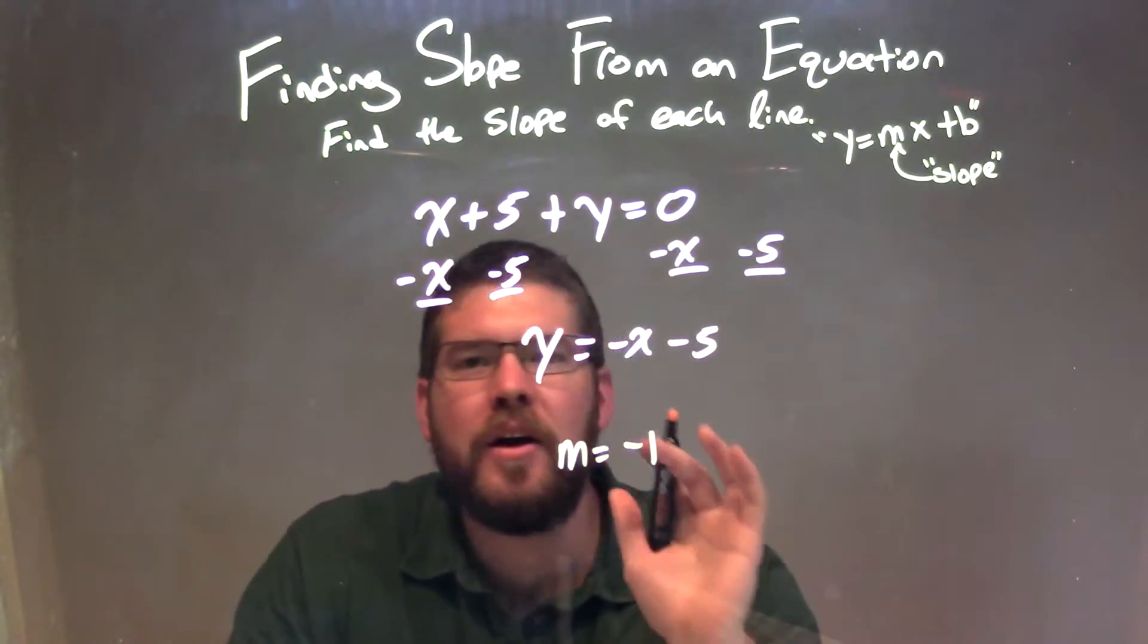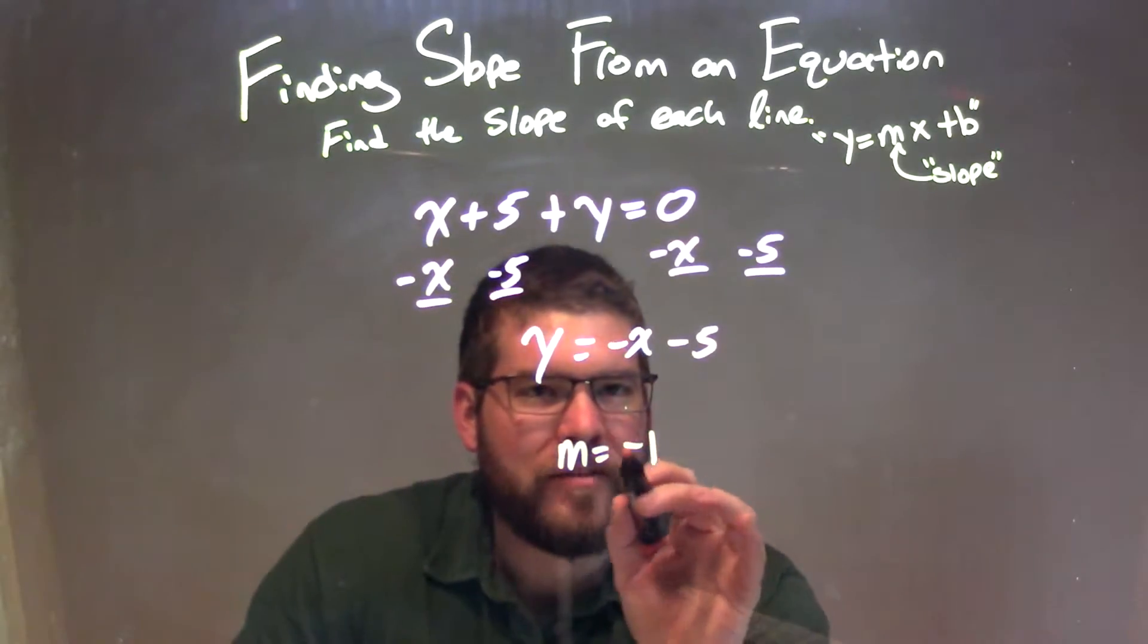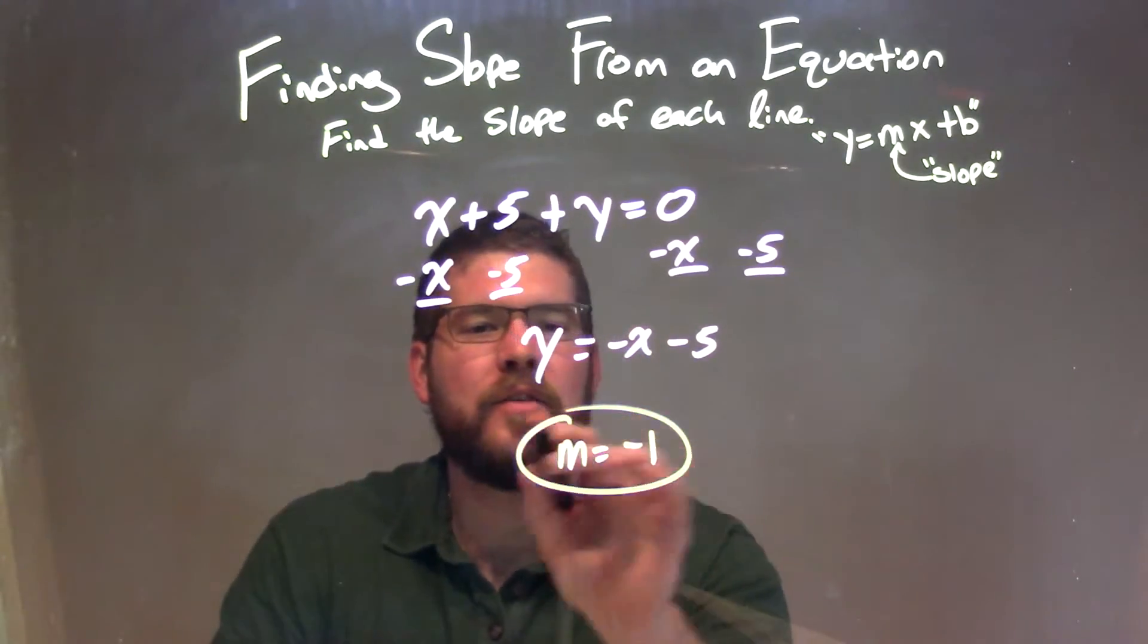So many students I'll see will write that. Don't do that. It's just m equals a negative 1. That's a coefficient in front of x, and that is our final answer.